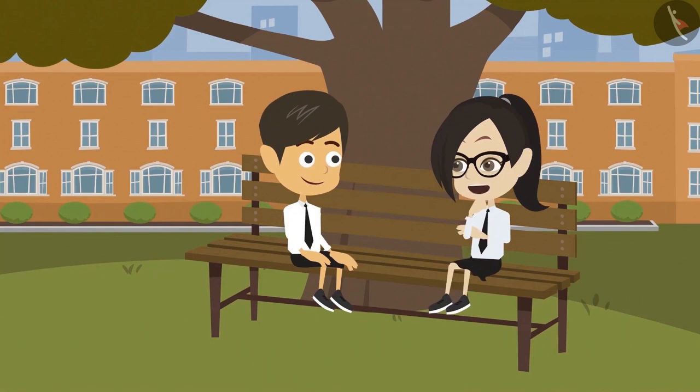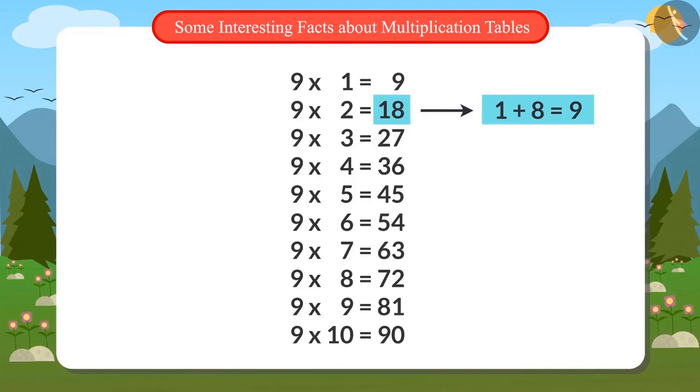Really? I don't believe it. I will do it myself. The third number in the table of 9 is 27. If we add the digits 2 and 7, we get the answer 9.